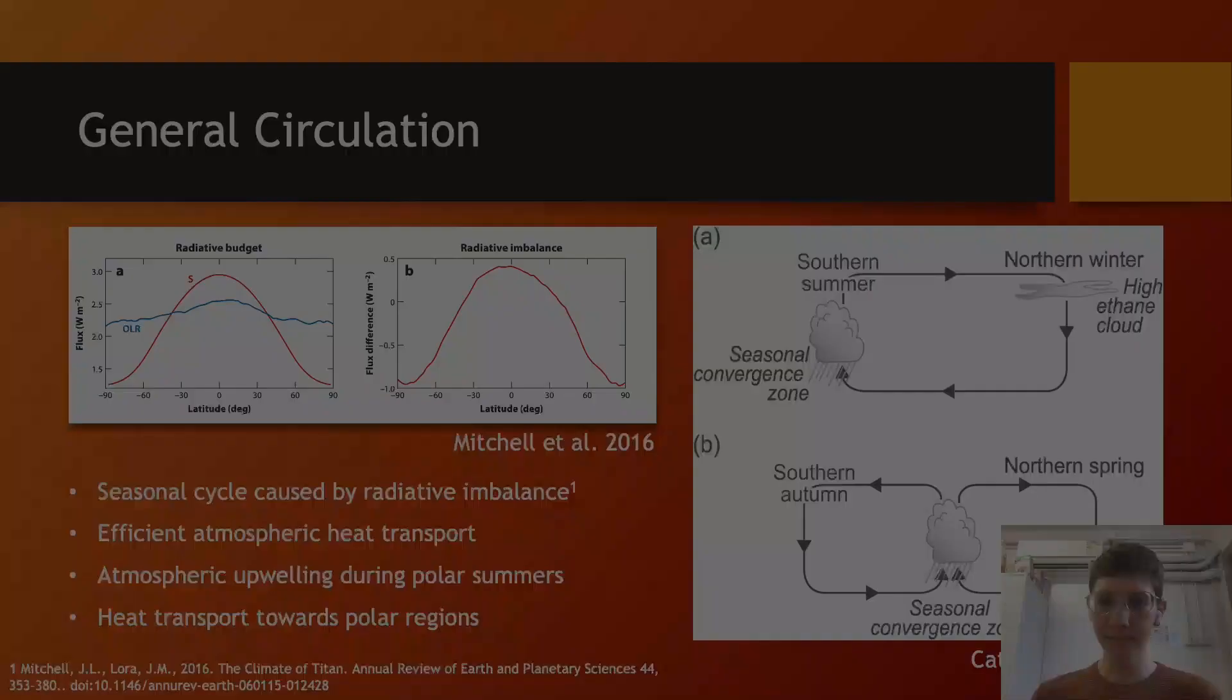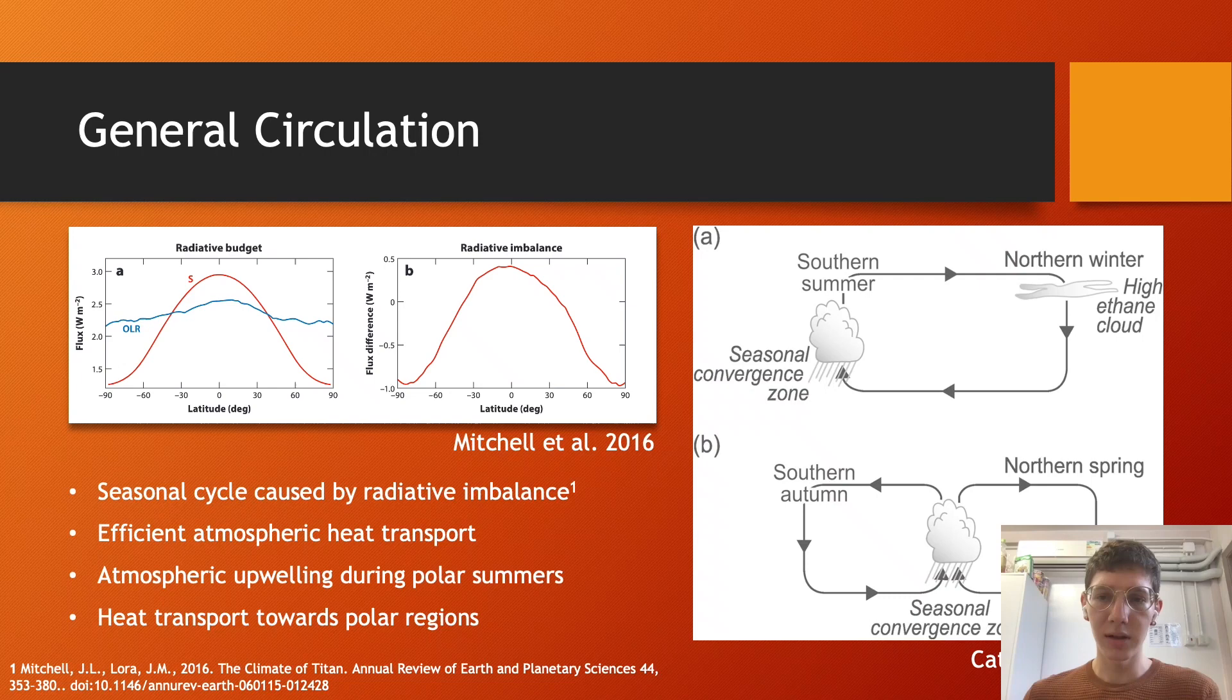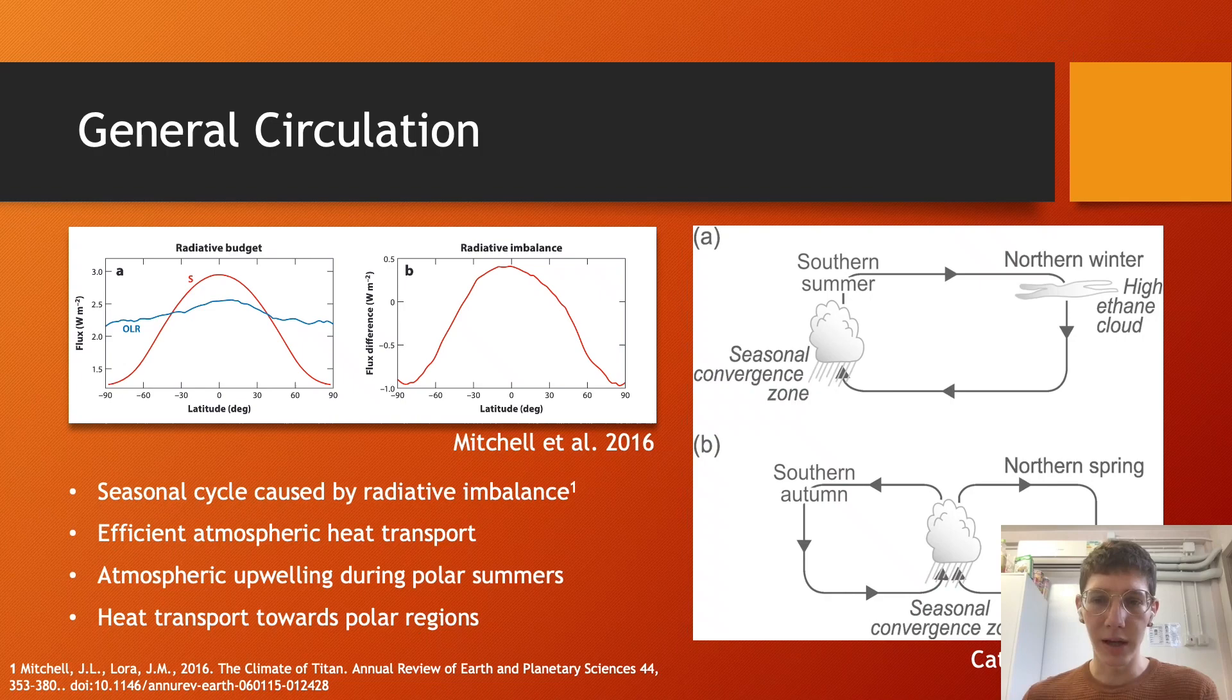So Titan's circulation is dominated by a strong seasonal cycle driven by differential heating, creating a virtually global Hadley cell circulation. This circulation efficiently transports heat meridionally, homogenizing the temperature of the troposphere, meaning it's more sensitive to solar radiative imbalances than localized effects. This seasonal variation is caused by Saturn's obliquity with a period of 29.5 years.